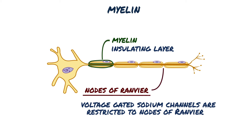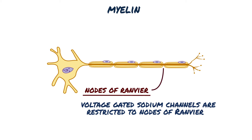As a result, action potentials are not generated in the regions between the nodes. Rather, the inward current produced during the rising phase of the action potential at a node travels all the way to the next node, where it depolarizes the membrane and regenerates the action potential.